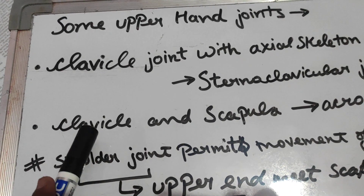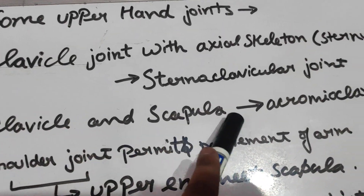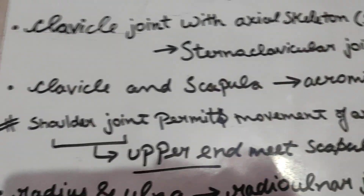The next is clavicle and scapula. Where the clavicle and scapula are joined, it will be the acromioclavicular joint.